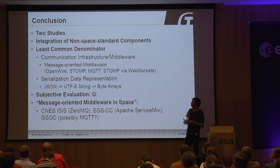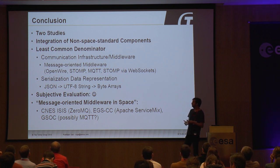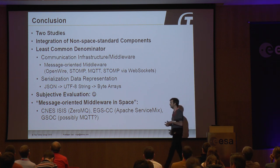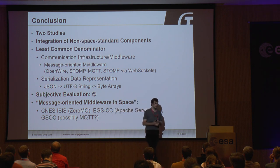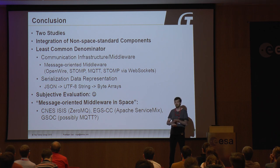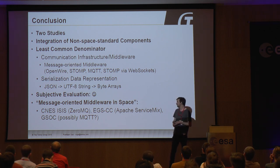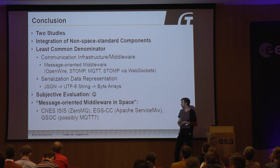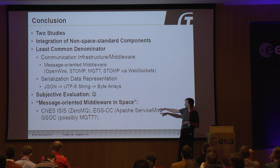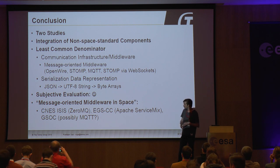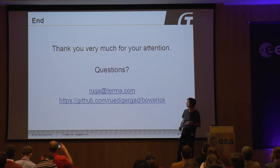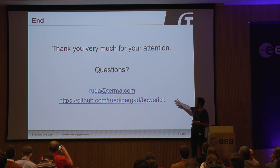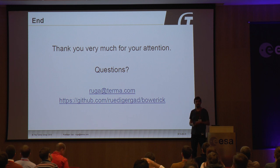As a conclusion based on two studies: our pain point was essentially the integration of non-space standard components. As a least common denominator, we found message-oriented middleware with UTF-8 JSON serialization. As a subjective evaluation, I'm very happy with the result — even though the middleware looked quite complex in the pictures, it got very much out of the way, and we could focus really on the core logic and the integration. Other message-oriented middleware systems exist in the space domain: Kness ISIS uses 0MQ, EGSEC uses Apache ServiceMix which comes bundled with ActiveMQ, and ESOC is possibly going to use MQTT for some future systems. There's my email address and the open-source project. Thank you very much.